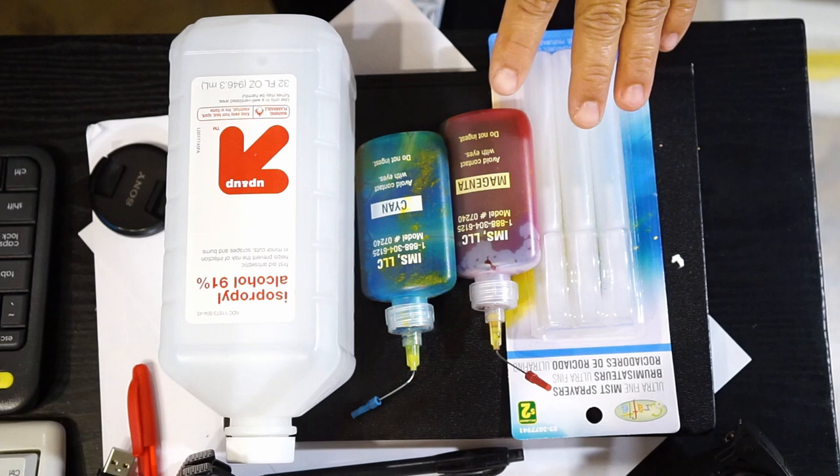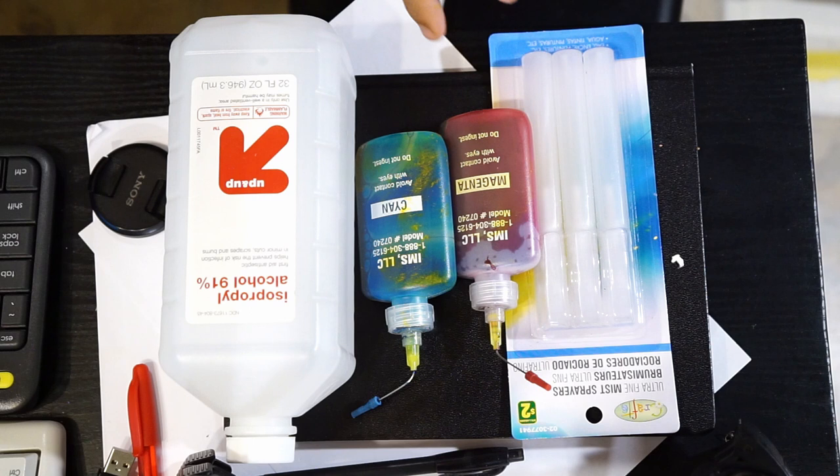To make a beautiful spray paint art from old inks, this is what you need to do. Of course, you need the desk jet inks - if you have a black one, red, blue, or yellow, whatever it is, that's what you need first. You also need isopropyl alcohol. Now the one I'm using is 91%.